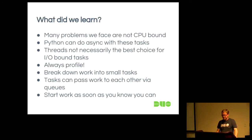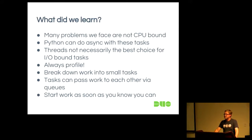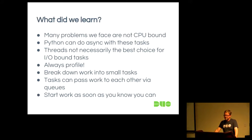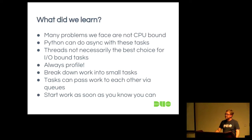What have we learned? There are many problems that are not CPU-bound, and these are getting more prevalent — working with network data, internet of things, wireless communication. More and more, our problems are about waiting on the network rather than processing speed. Python can do asynchronous things with these types of problems. Threads may not necessarily be the solution you want. You should always be profiling. Break down work into very small tasks — these tasks are testable, easy to change, easy to rearrange. Tasks can pass work to each other via queues. You can start work as soon as you know you can.